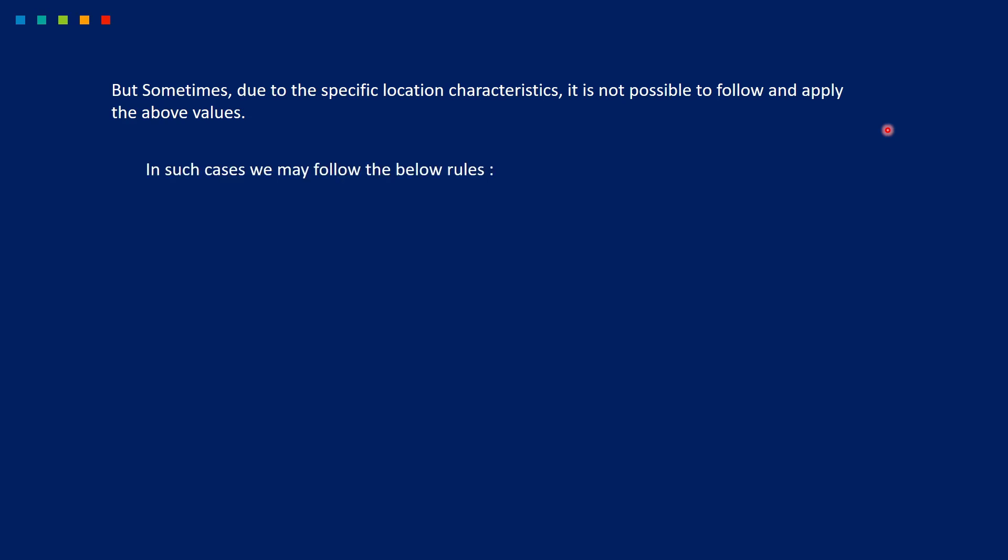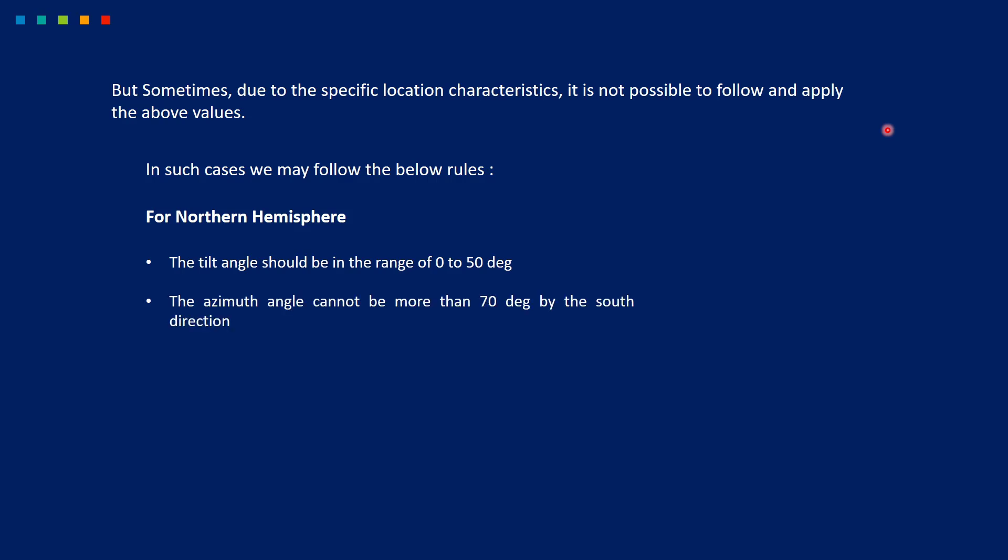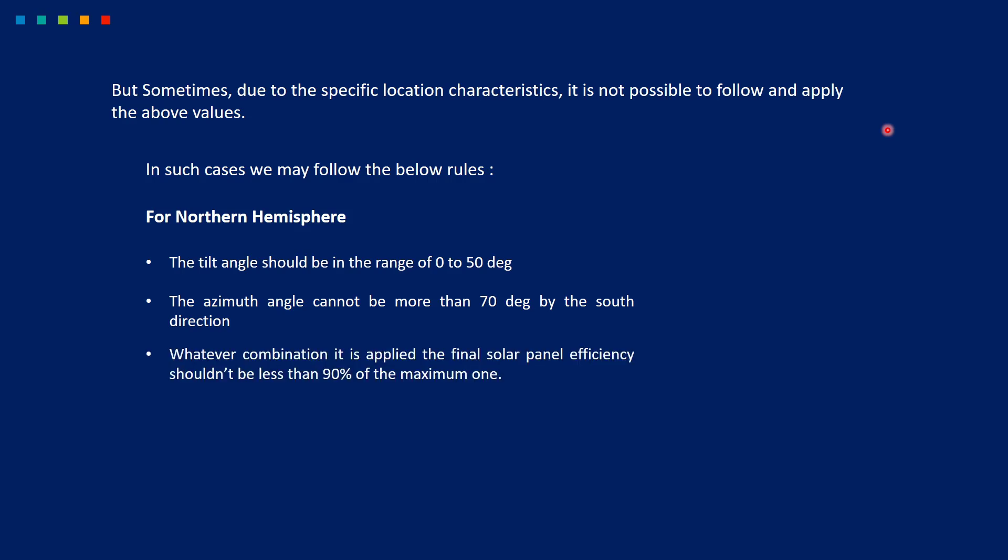Sometimes, due to specific location characteristics, it is not always possible to follow those rules. In such cases, we can follow these guidelines for the northern hemisphere: the tilt angle should be in the range between 0 and 50 degrees, and the azimuth angle should not be more than 70 degrees from the south direction. Whatever combination we use, the final solar panel efficiency should not be less than 90% of the maximum.